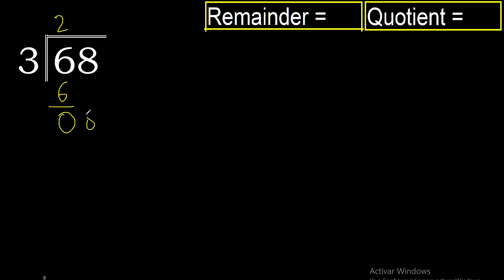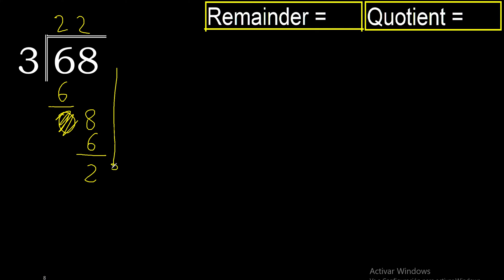Bring down 8. Now with 8: 3 multiplied by 3 is 9 — excessive. 3 multiplied by 2 is 6, which is the closest. 8 minus 6 is 2. There is no number that goes down, therefore we finish. The remainder is 2.